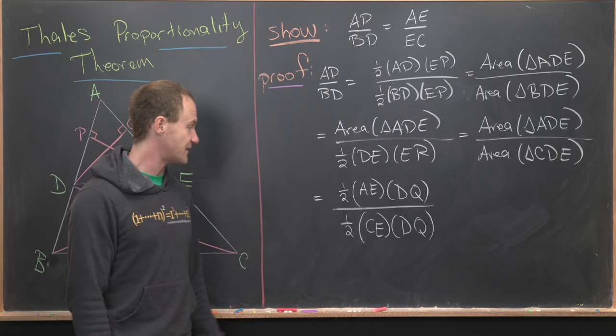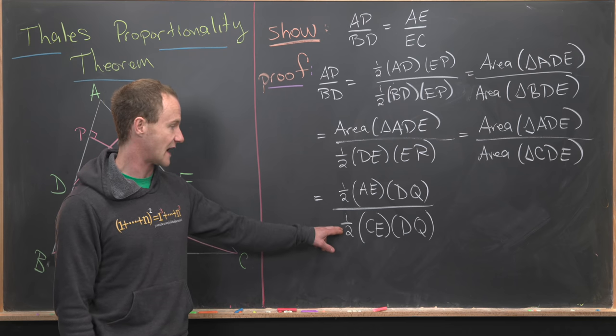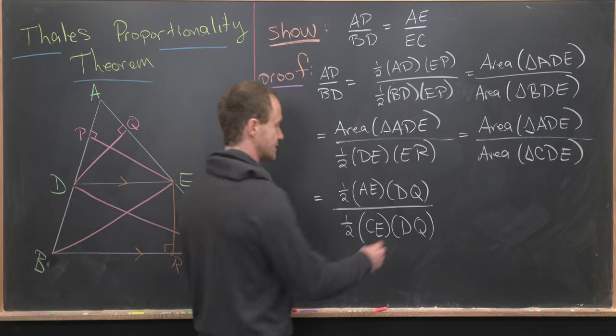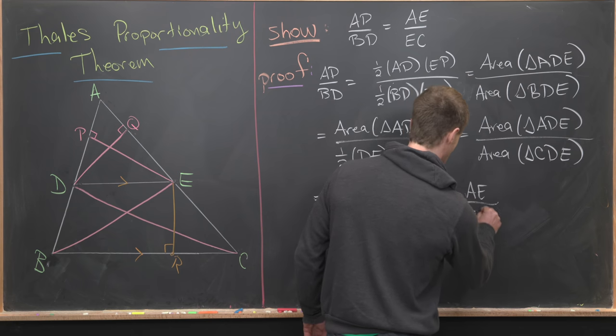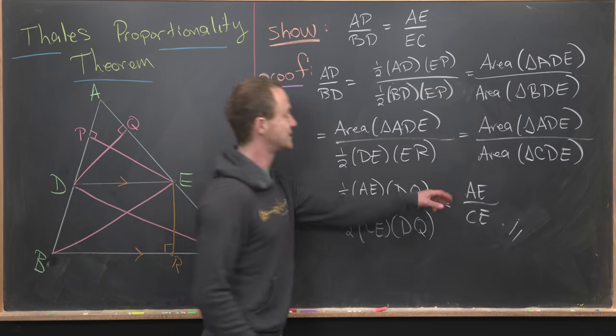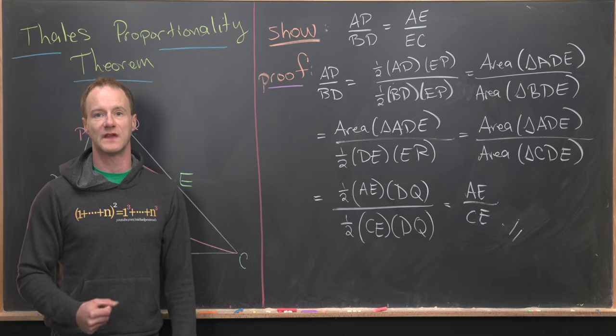But notice some stuff here cancels: the half cancels with the half, the DQ cancels with the DQ. And we're left with AE over CE, which is exactly what we wanted to show. And that's a good place to stop.